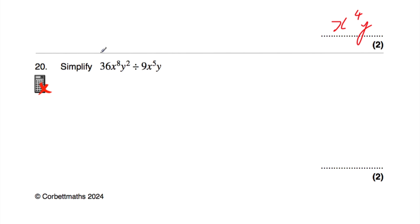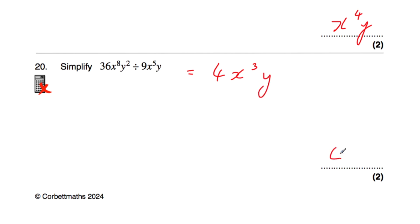Question number 20: simplify 36x⁸y² divided by 9x⁵y. 36 divided by 9 is 4. x⁸ divided by x⁵ — subtract powers: 8 minus 5 is 3, so x³. y² divided by y is y. The answer is 4x³y.